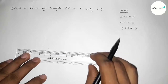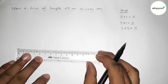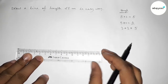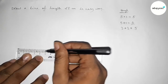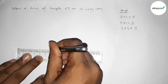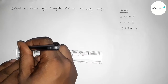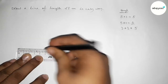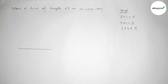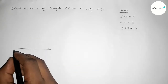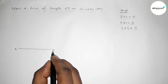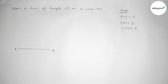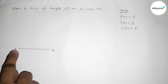Now, first drawing a line of length 6 centimeter. So here I am drawing a 6 centimeter line. Taking point A at one end and point B at the other, so AB equals 6 centimeter.